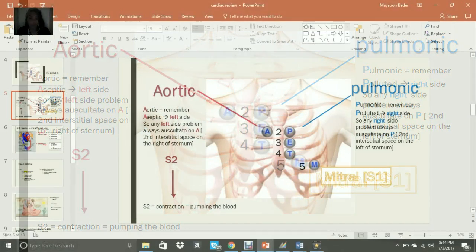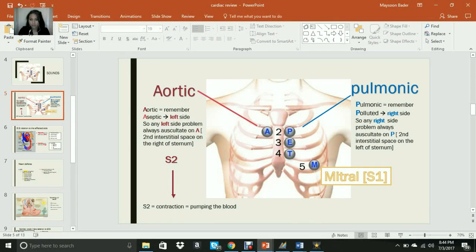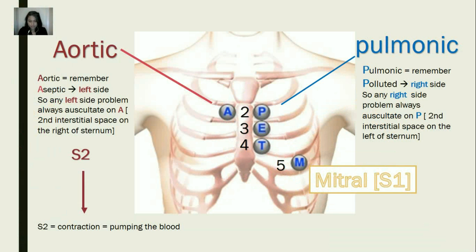Which is the S1. So as we continue, we said if it's A — aortic, aortic — it's aseptic, left side. If it's P — pulmonic, pulmonic — polluted, right side. And then E is Erb's, the third. And then the fourth base is the tricuspid, and then the fifth is the mitral, or the base of the heart.